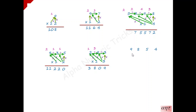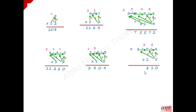Now we will see how to multiply 9854 by 15. 5 into 4 is 20 — 0 is written, 2 is carry forward. 5 into 5 is 25, 25 plus immediate right 4 is 29, 29 plus 2 carry forward is 31 — 1 is written, 3 is carry forward. 5 into 8 is 40, 40 plus 5 is 45, 45 plus 3 is 48 — 8 is written, 4 is carry forward. 5 into 9 is 45, 45 plus 8 is 53, 53 plus 4 is 57 — 7 is written, 5 is carry forward. Multiply 1 into 9: 1 into 9 is 9, 9 plus 5 is 14 — that is our final answer.